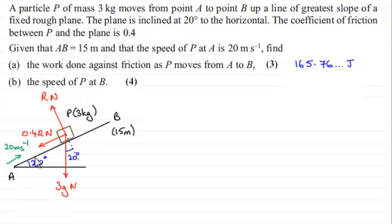And we were given that AB was 15 metres and the speed of P at A was 20 metres per second. And in part A, we were asked to find the work done against friction as P moves from A to B. And we found out that it was 165.76 joules.